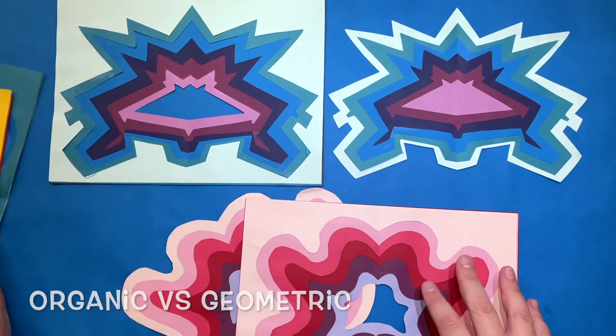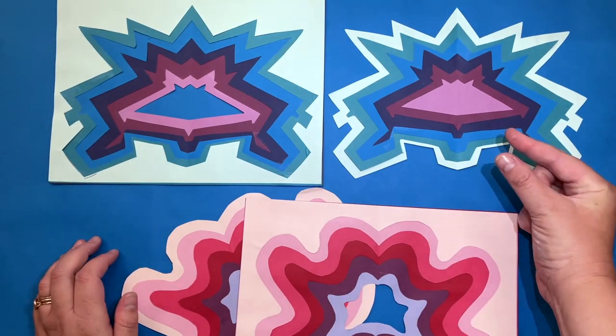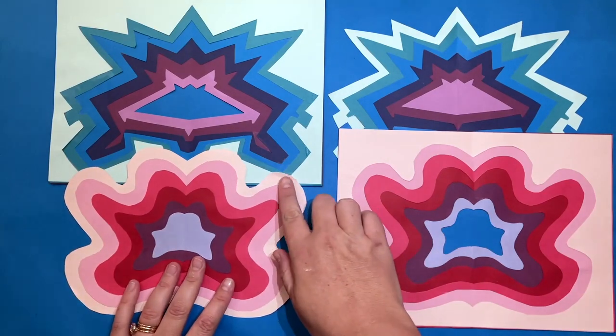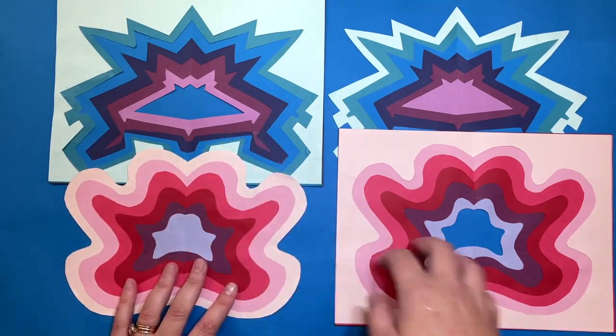We remember boys and girls that geometric shapes have angles or pointy parts. Organic shapes have rounded edges or smooth outsides.